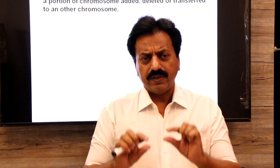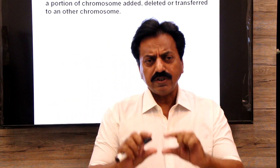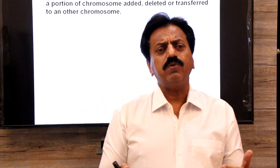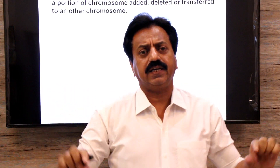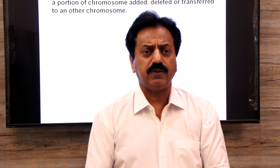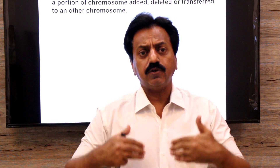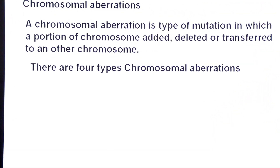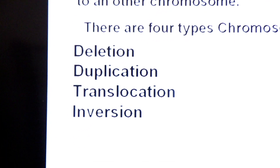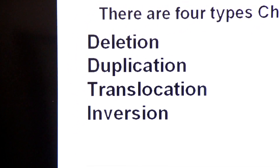In point mutation, there was deletion or insertion at one nucleotide of DNA — that was a small scale mutation. But chromosomes have many segments, and each segment contains many genes. When a segment is removed, many genes are removed. This large scale mutation involves chromosome segments being deleted, repeated, or transferred to another chromosome. There are four types of chromosomal aberrations: deletion, duplication, translocation, and inversion.